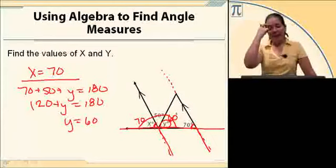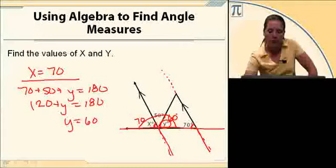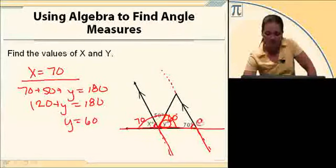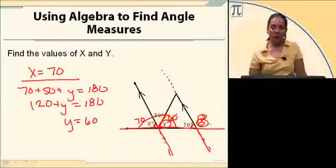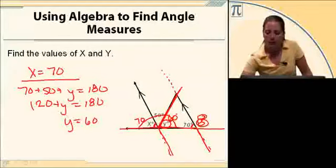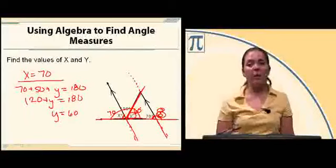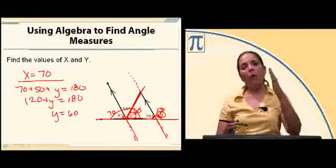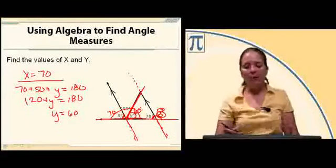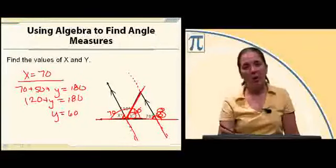Now a big thing that messes some people up is they see this y and they automatically think that right here is the corresponding angle. Notice that that corresponding angle was cut by a 50 degree angle. So 70 plus 110 should give me 180. 50 and the 60 gives me that 110. So just be careful when you're looking at corresponding angles that if there's other lines involved, you take the whole angle, not just part of it. Thank you.